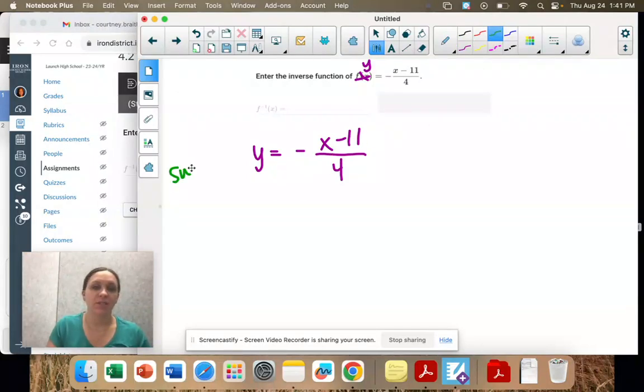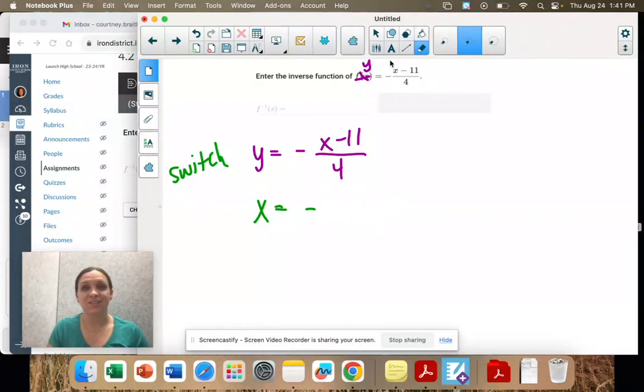Our first step is to switch the x and y. So now I have x equals negative x minus 11. Oops, I wrote the x. It needs to be y. Y minus 11 over 4.